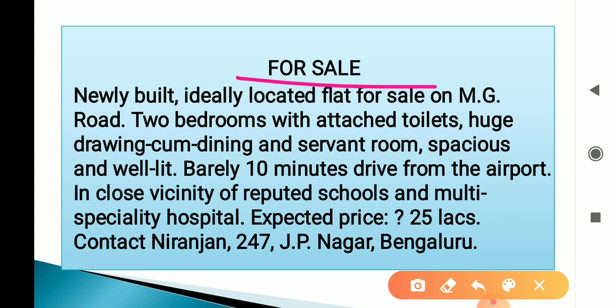You have to write the locality and area. Two bedrooms with attached toilet — that is 2 BHK with attached toilets — drawing-cum-dining and servant room. You are giving the facilities in that flat: it is a 2 BHK flat, servant room is included, drawing-cum-dining hall is there. It's very spacious and well-lit — we are showing all the good qualities of our flat.